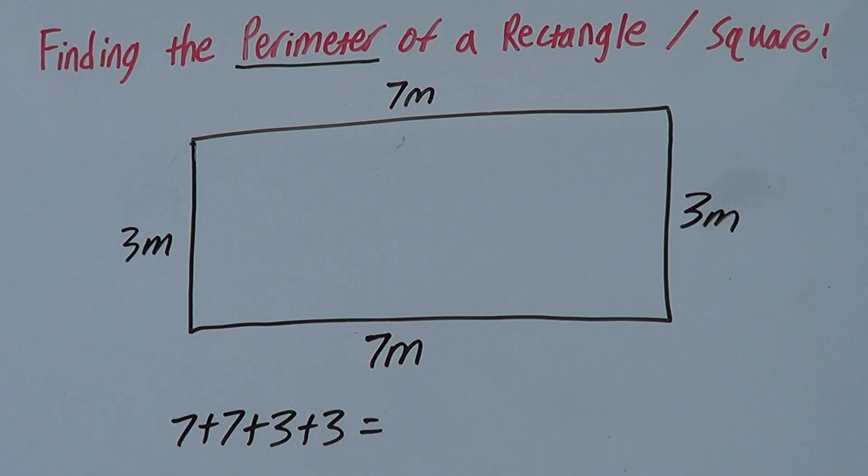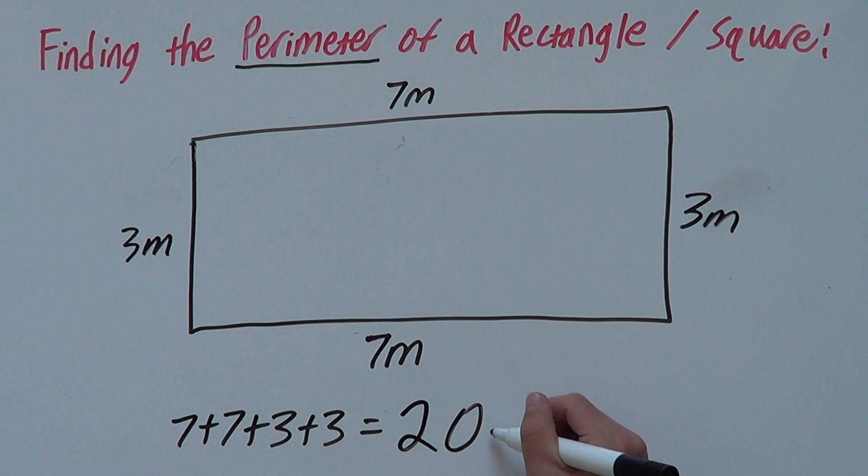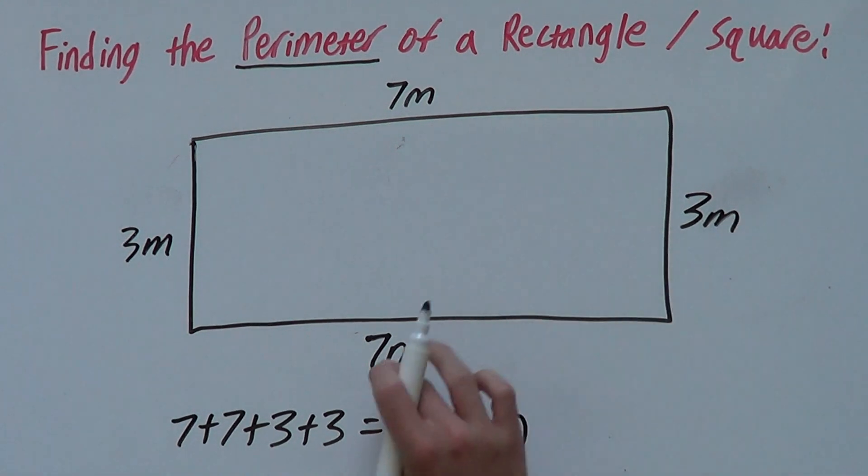And plus another 3 is 20. So the perimeter of this rectangle is 20 meters because we're working in meters.